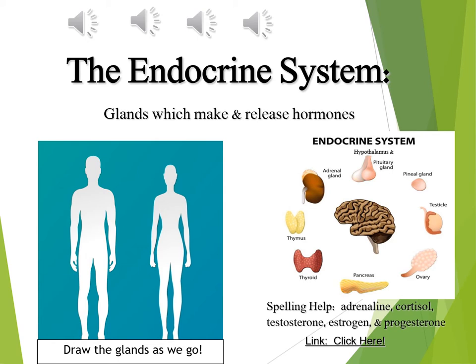The thyroid needs a raw material in your diet to do its job effectively. Some students say sugar — no, that's a different gland. Some say salt — no, that's yet another gland. The thyroid needs iodine. So perhaps you buy iodized salt. That's sufficient.